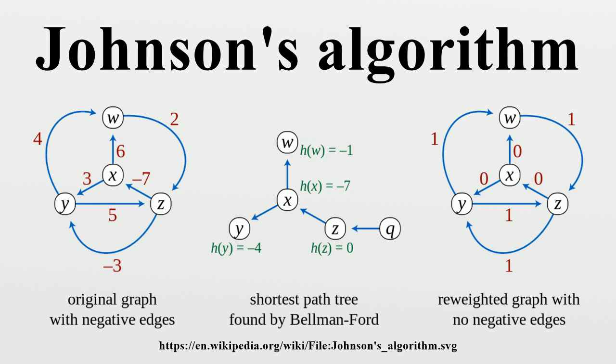Correctness: In the reweighted graph all paths between a pair S and T of nodes have the same quantity H(S) minus H(T) added to them. The previous statement can be proven as follows. Let P be an S-T path. Its weight W in the reweighted graph is given by the following expression.